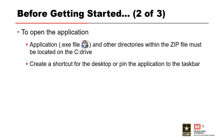To open the software, the application .exe file and the other directories within the zip file you are provided must be located on the C drive of your computer. From there, you can create a shortcut to place on the desktop or pin the application to the taskbar. The program will not open unless the main application file is located on the C drive.